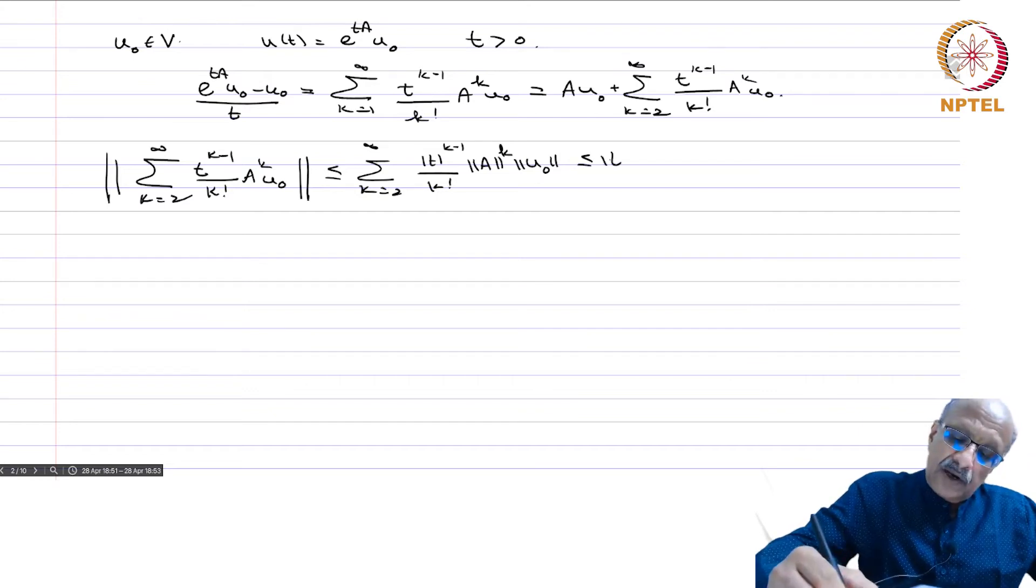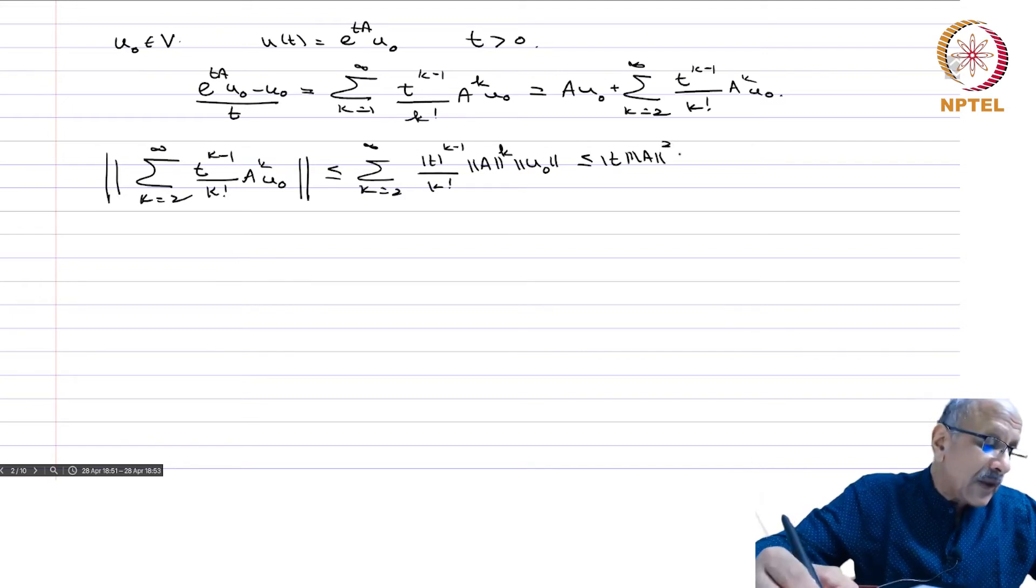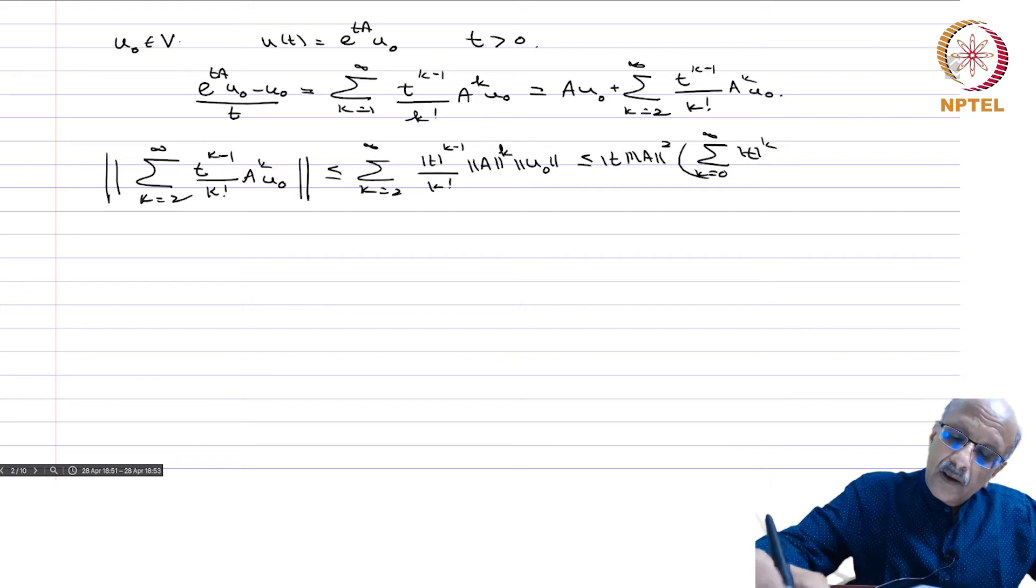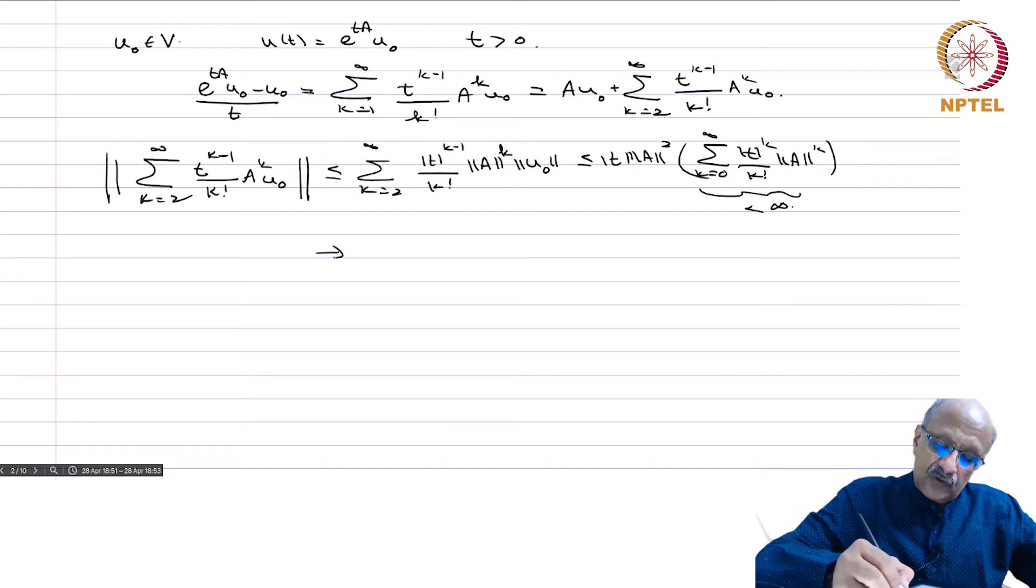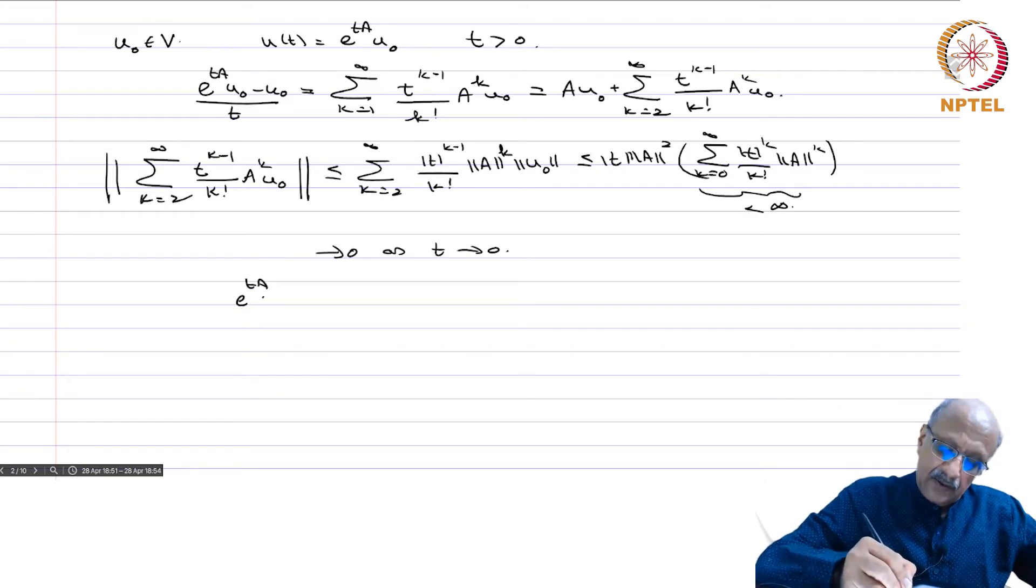And that is less than or equal to sigma k equals 2 to infinity of t^(k-1)/k! norm A^k, and this is nothing but an exponential series. This is finite, an exponential series, and therefore this goes to 0 as t goes to 0. And therefore, e^(tA)u_0 minus u_0 divided by t goes to A u_0 as t goes to 0.